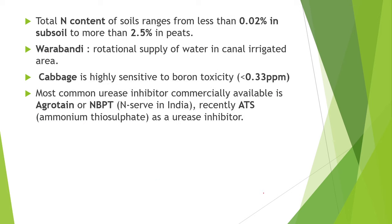Next point is, the total nitrogen content of soil ranges from less than 0.02% in subsoil to more than 2.5% in peats. Next point is varabandi — it is nothing but the rotational supply of water in canal irrigated areas.